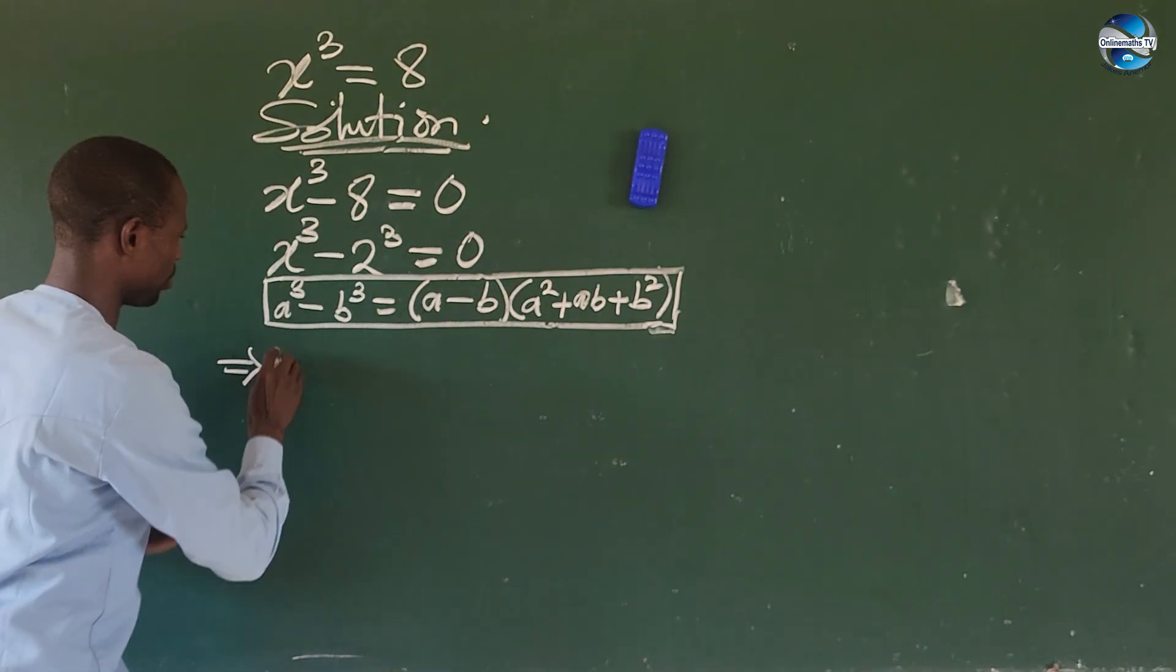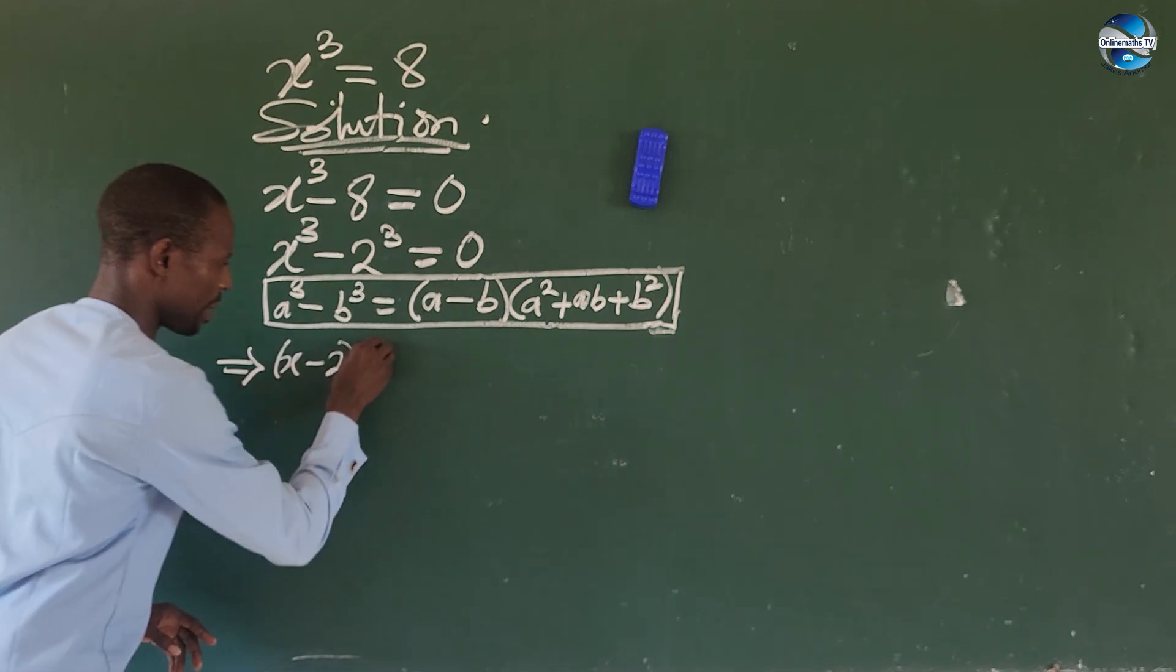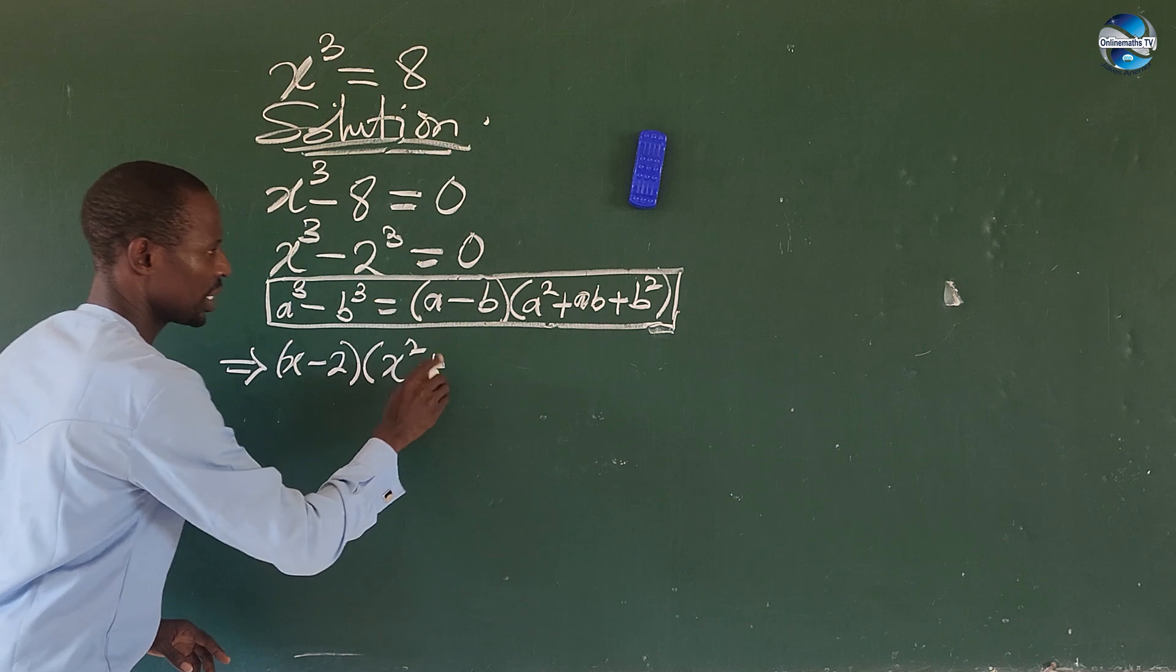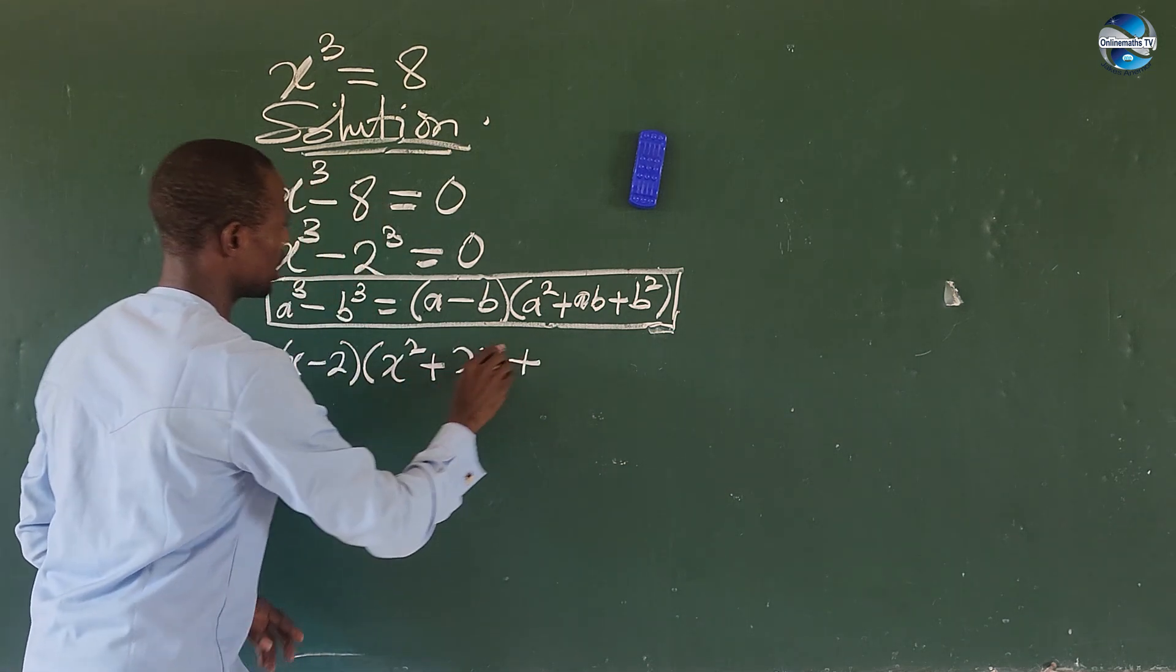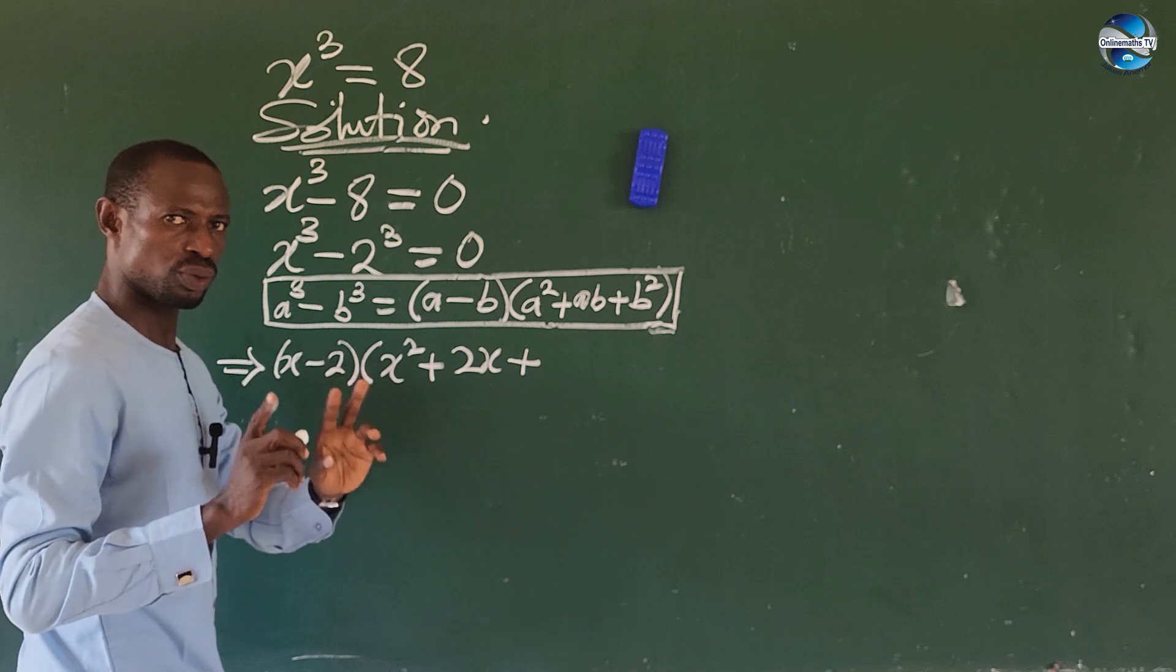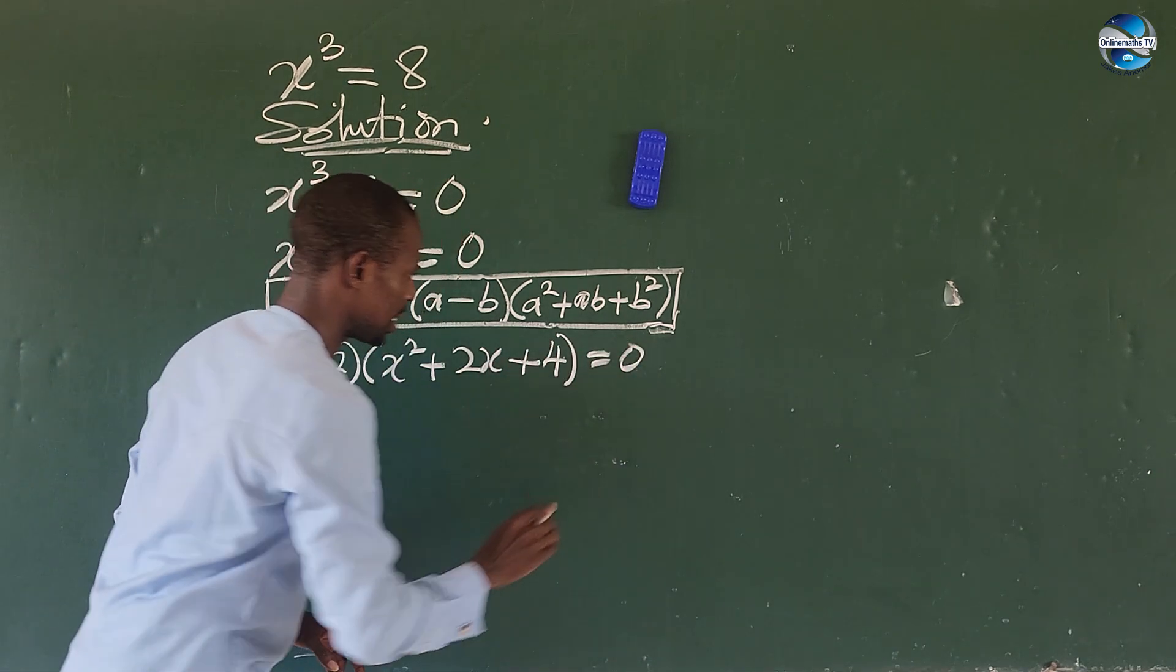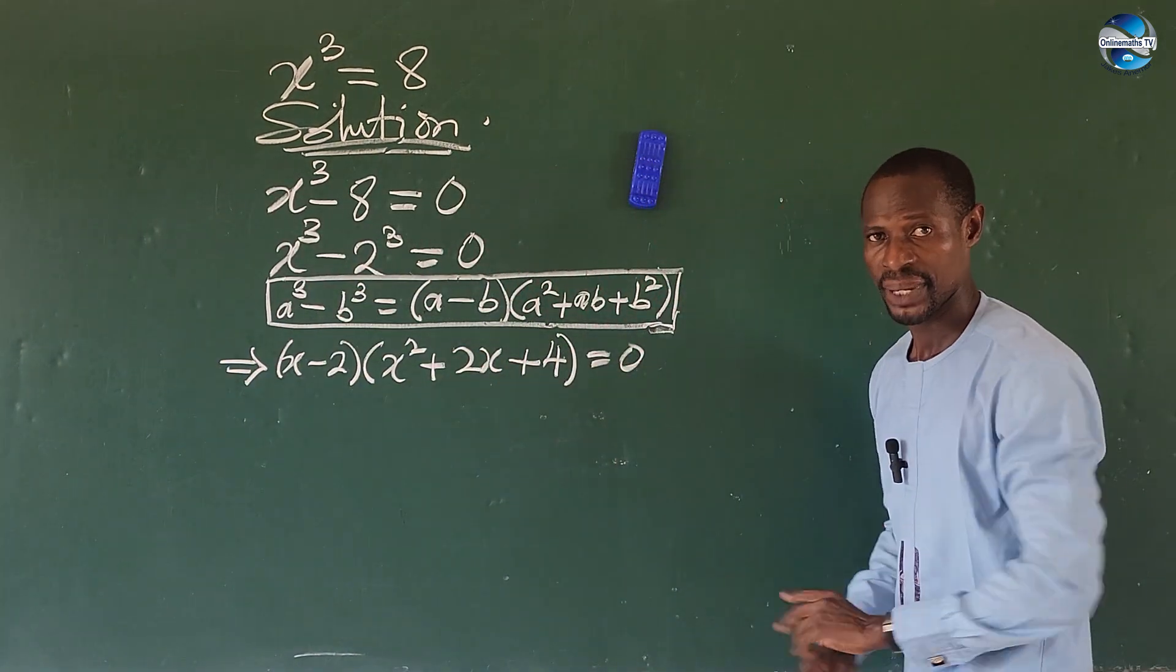So this now implies here we're going to give us (x - 2) bracket, bracket up in our x², plus our 2x, plus 2² which is 4, close bracket equal to 0. So here we can equate this to 0, equate this to 0.